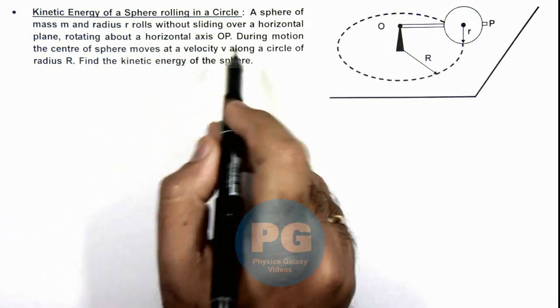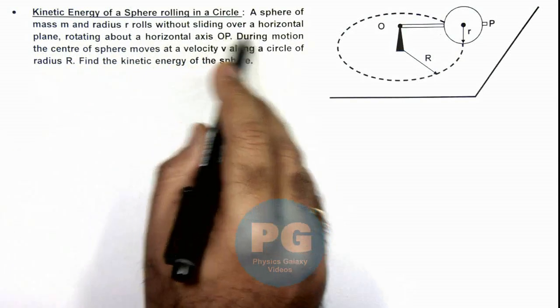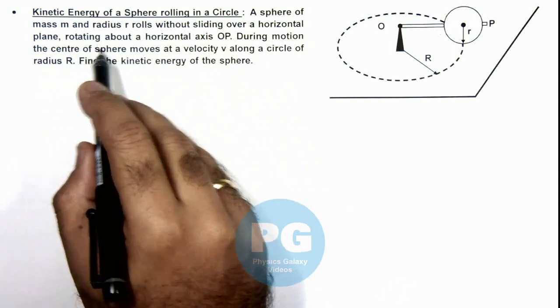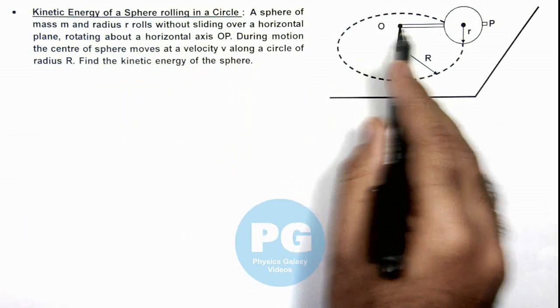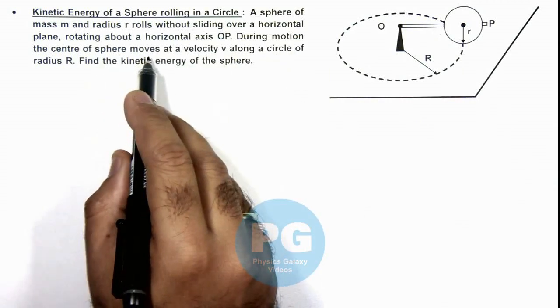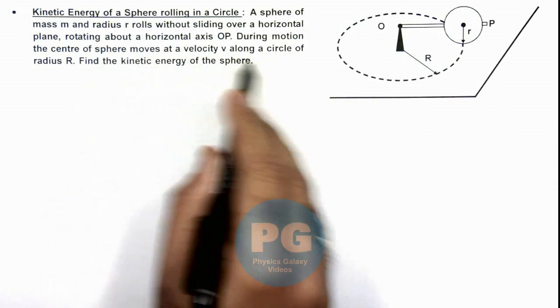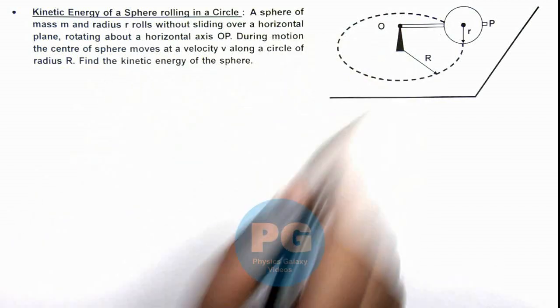We are given that a sphere of mass m and radius r rolls without sliding over a horizontal plane, rotating about horizontal axis OP. During motion, the center of sphere moves at a velocity v along a circle of radius R. We are required to find the kinetic energy of this sphere.